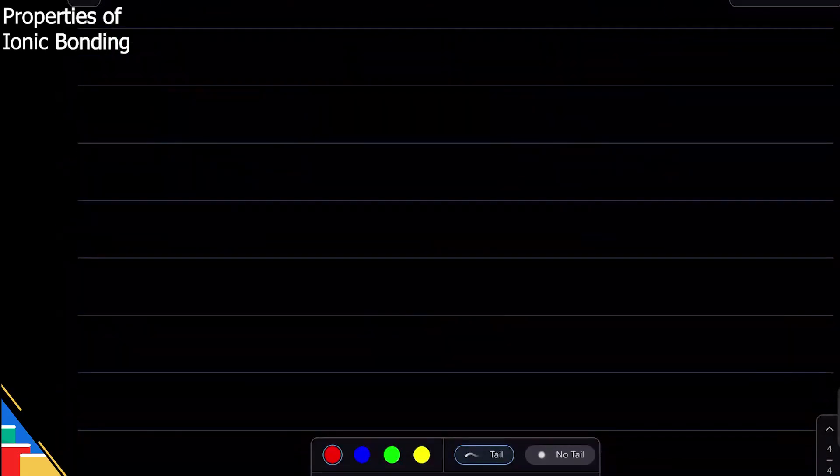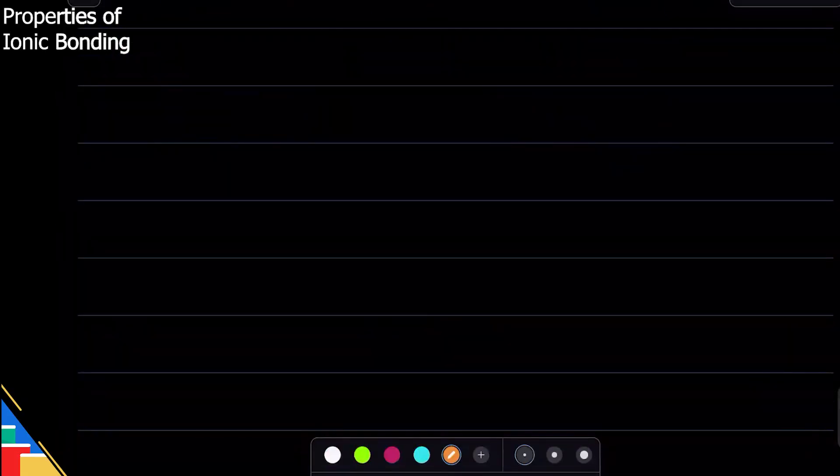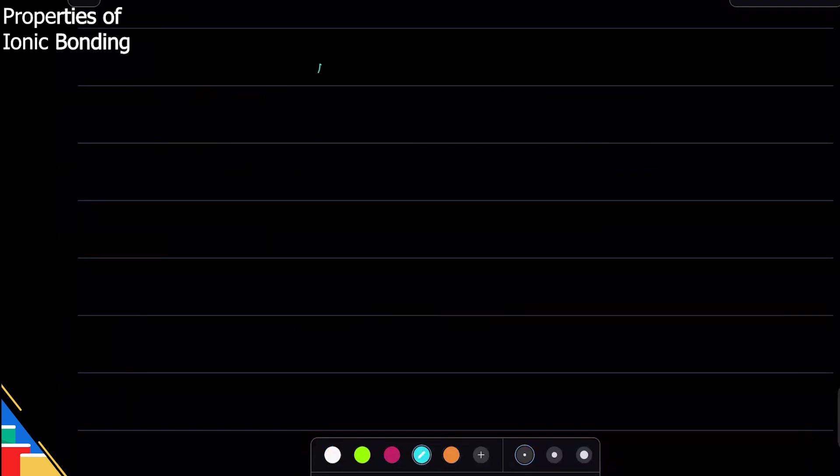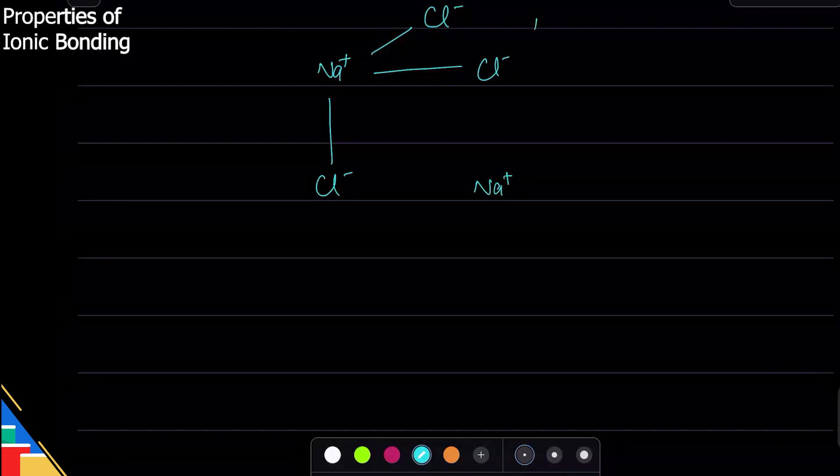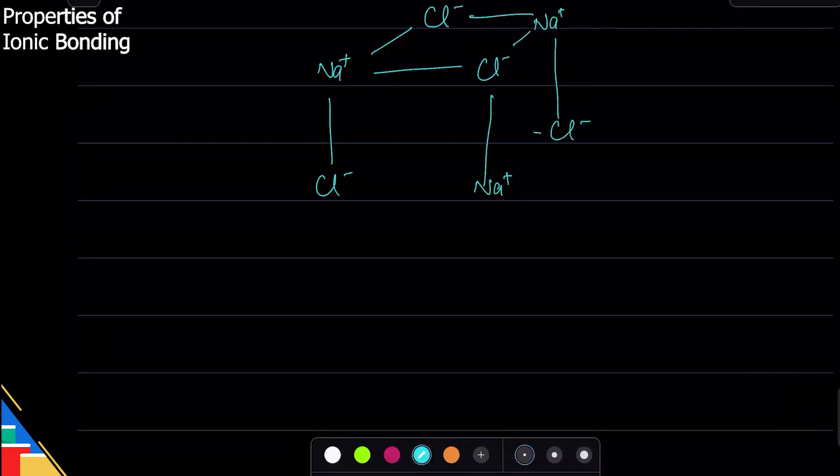Every bonding has a structure. For sodium and chloride, the structure is like this: sodium ion is surrounded by chloride on all sides - front, back, forward, left, right, up, down, everywhere. And chloride ion is surrounded by sodium ion on all sides. It continues like this, with sodium joined to chloride and chloride joined to sodium.